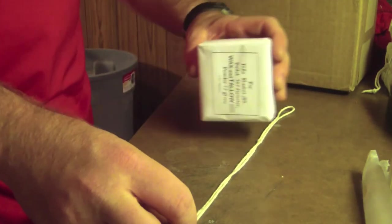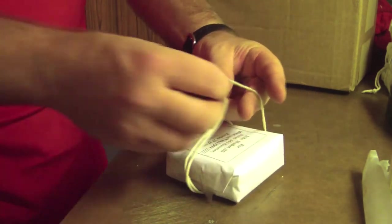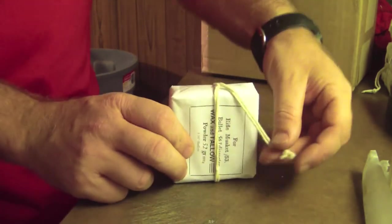By taking a 14 inch piece of string, doubling it up and tying a knot in the end, then looping it around the cartridge packet, the tying off is complete.